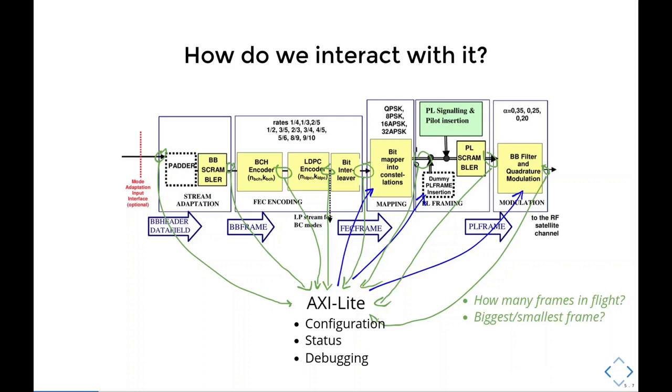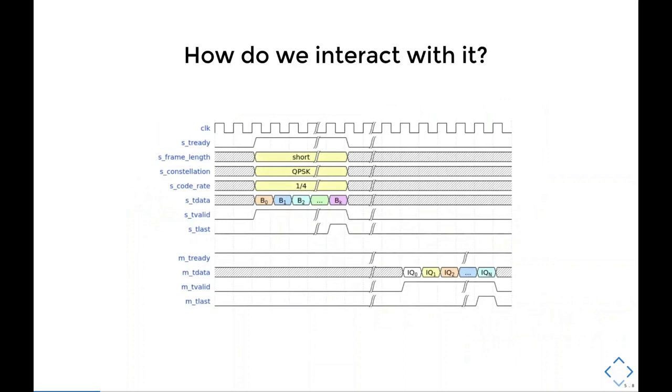We can also block a data stream for debug, and allow, for example, a word at a time, or a frame at a time, to check how the system behaves. The input and output stream's timing diagram looks like this. In this example, we can see an input frame configured as short frame, QPSK, encoder rate one-fourth.